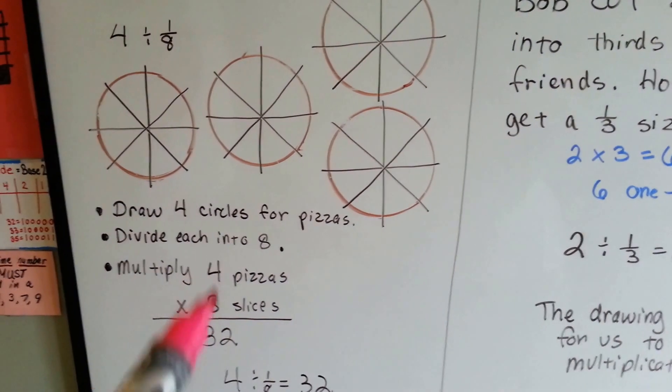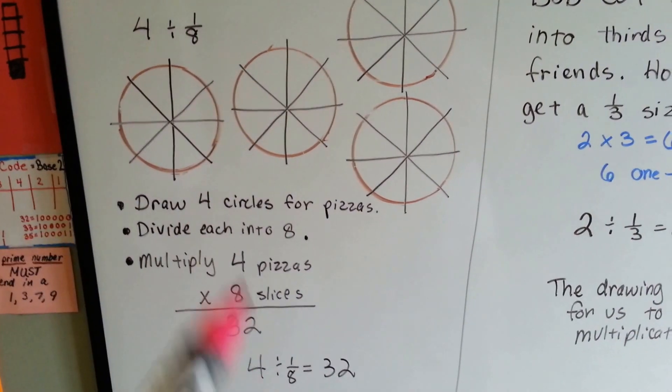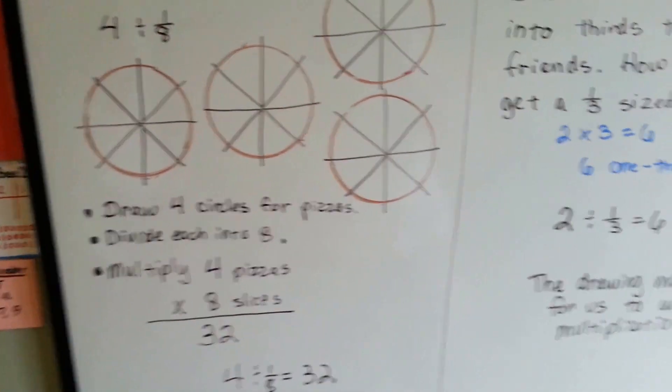So by multiplying and drawing the diagram, we can very easily see that four divided into eighths is 32. Wasn't that easy?